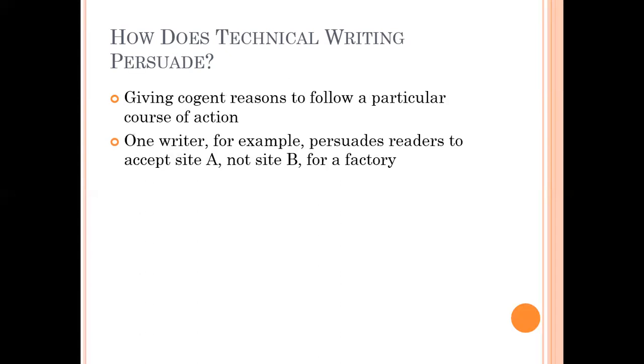Number three: how does technical writing persuade? By giving cogent reasons to follow a particular course of action. One writer, for example, persuades readers to accept site A, not site B, for a factory. There's persuasion going on, and it can vary from topic to topic.